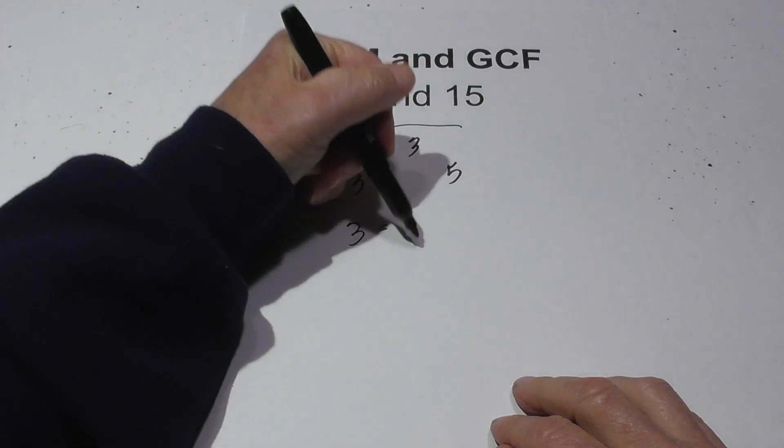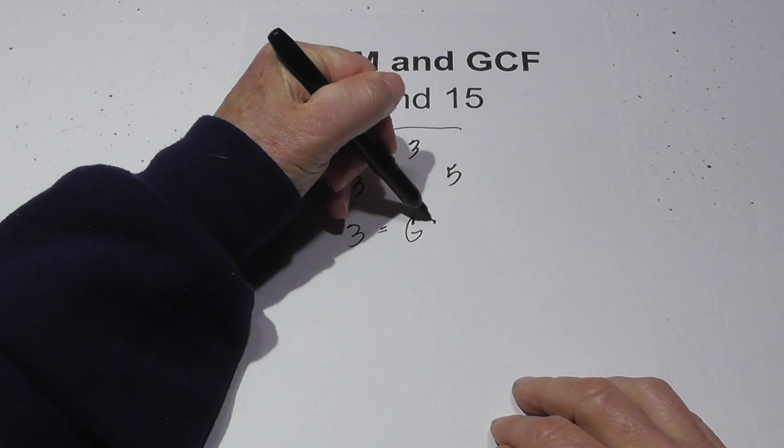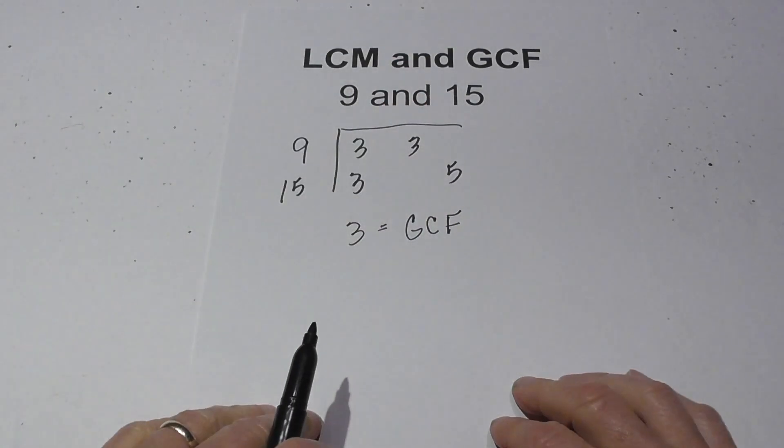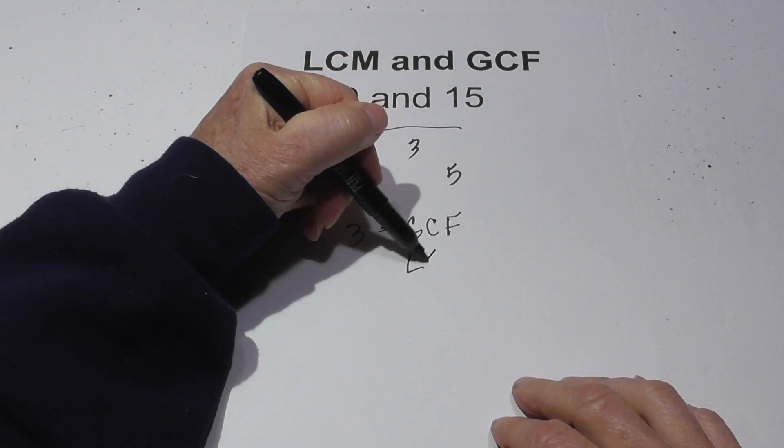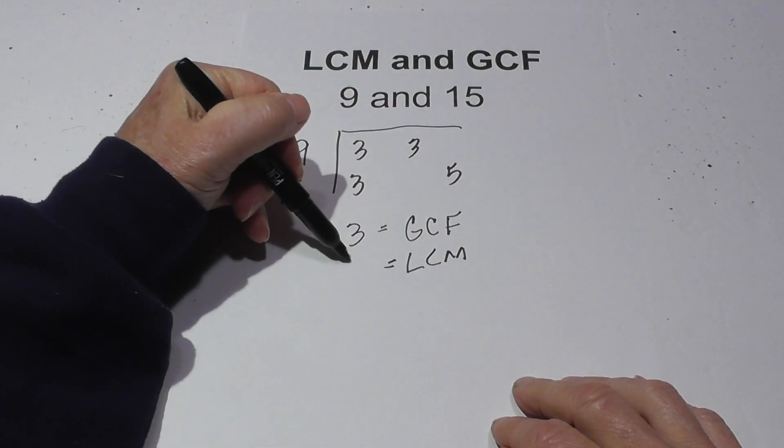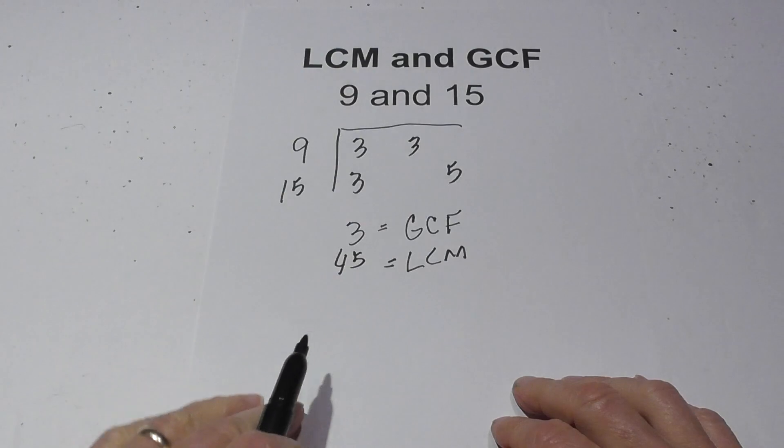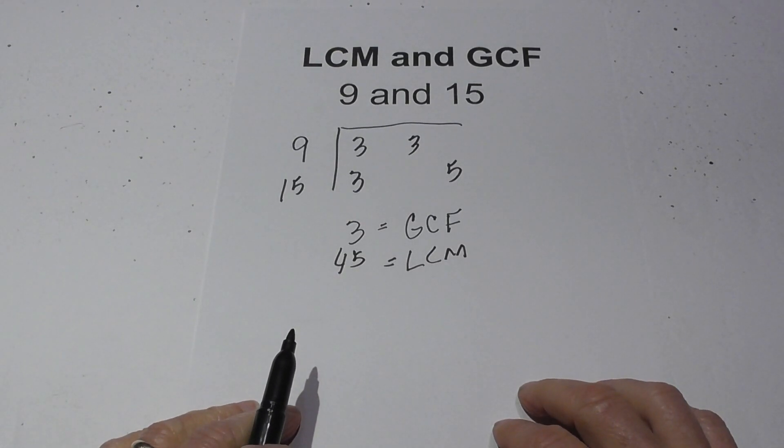So in summary the LCM equals 45 and the GCF equals 3.